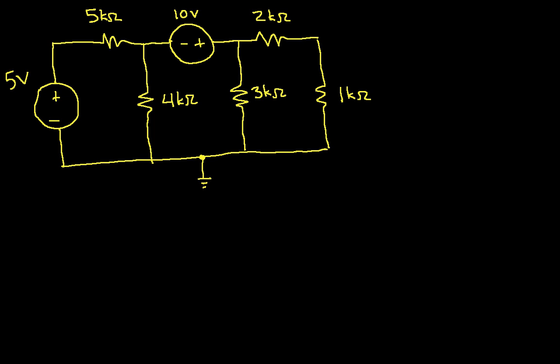The next thing is to define our node voltages. We have a node here with voltage V1, a node here with voltage V2, a node here with voltage V3, and a node here with voltage V4. We've actually completed step two. In one sense, we're already halfway done.